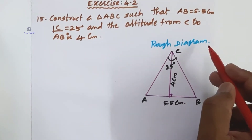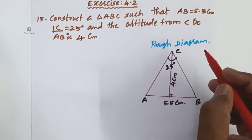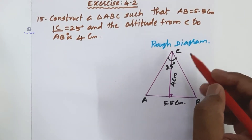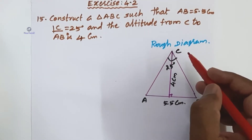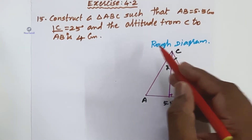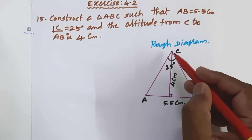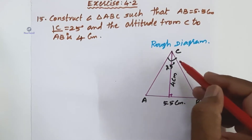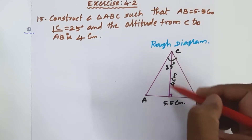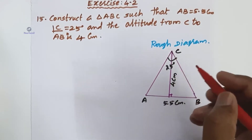Let's draw a rough diagram. For the rough diagram, draw one complete triangle. The altitude information: the base AB is 5.5 centimeters, the vertical angle is 25 degrees, and the altitude is 4 centimeters.